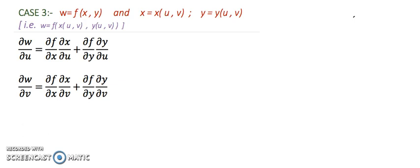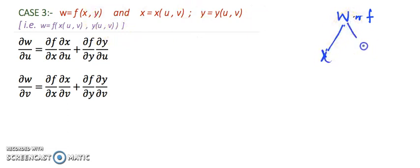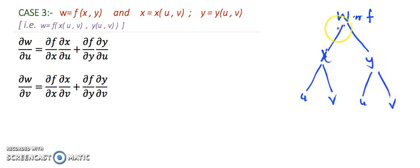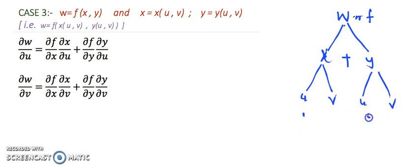First let's make a tree because the tree will give a clear picture of how to write the expression. The first node is w, or you can say f, and that depends upon x and y. So I get two branches x and y, and then x and y further depend upon u,v and u,v. When you have more branches, we get the contribution of every branch one by one. First I want the partial differentiation of w with respect to u. I can see u is present in this branch and u is present in this branch.